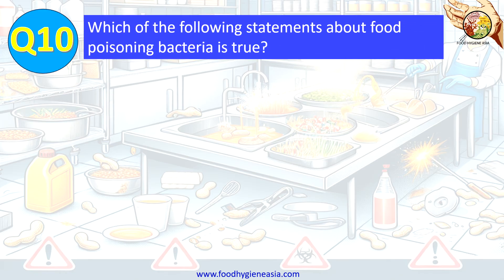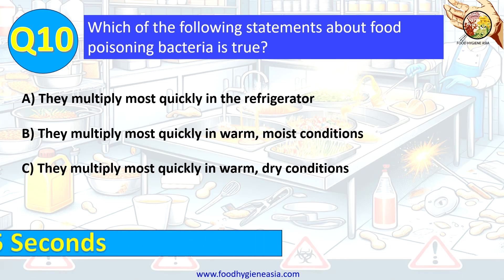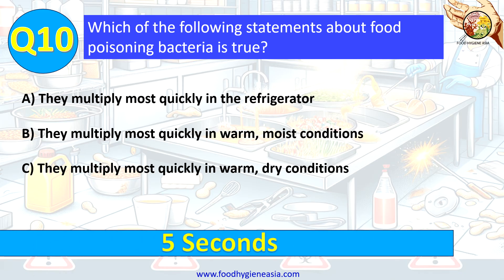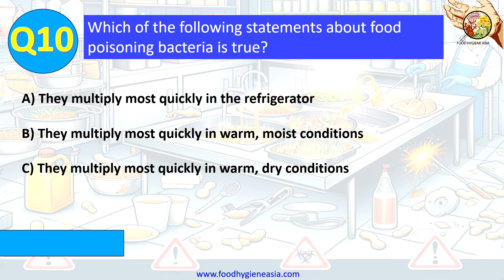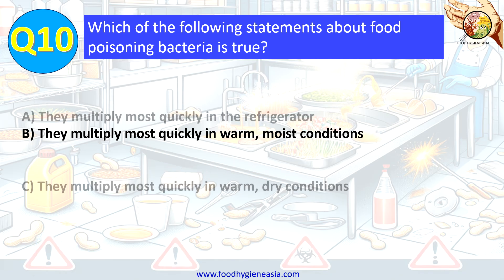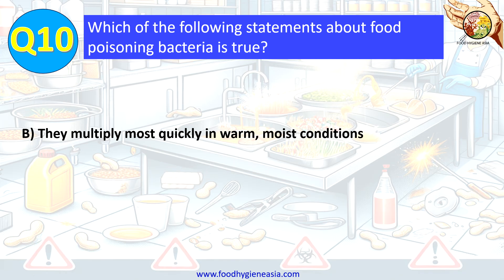Question 10. Which of the following statements about food poisoning bacteria is true? A. They multiply most quickly in the refrigerator. B. They multiply most quickly in warm, moist conditions. C. They multiply most quickly in warm, dry conditions. The correct answer is B. They multiply most quickly in warm, moist conditions.